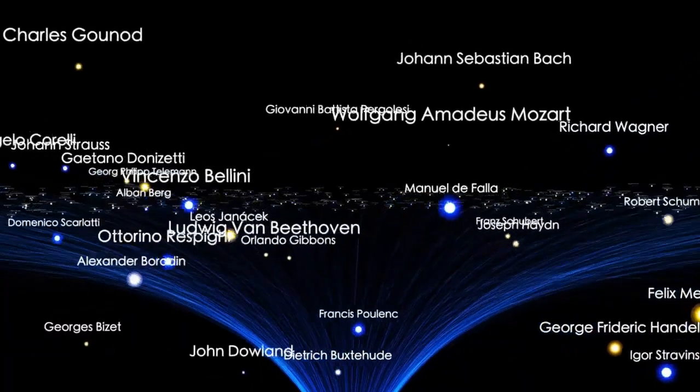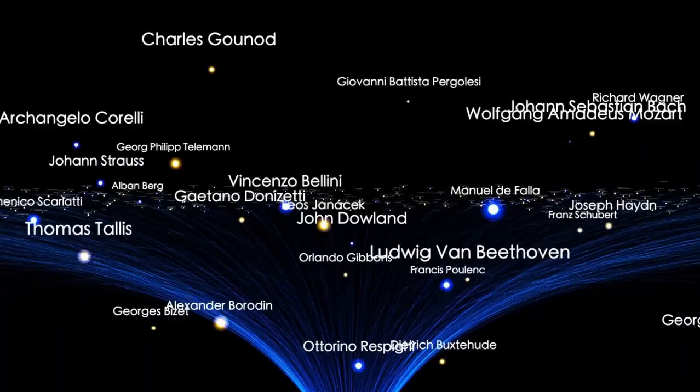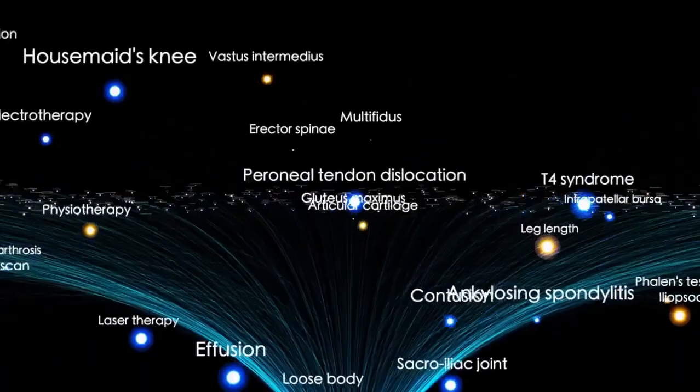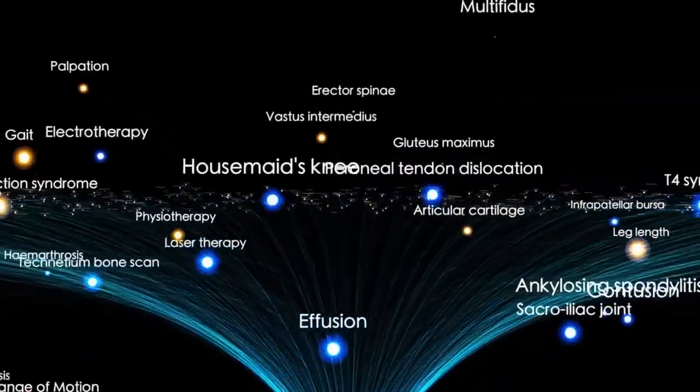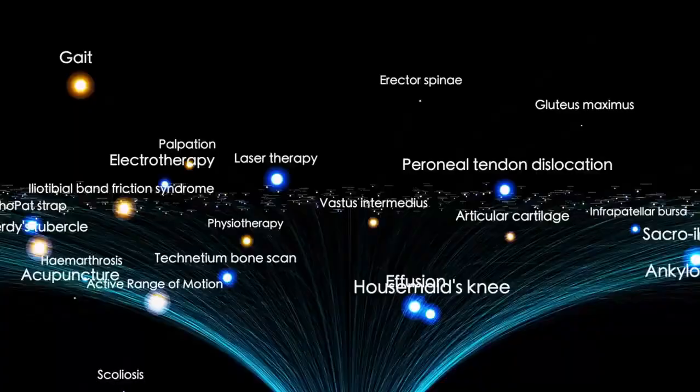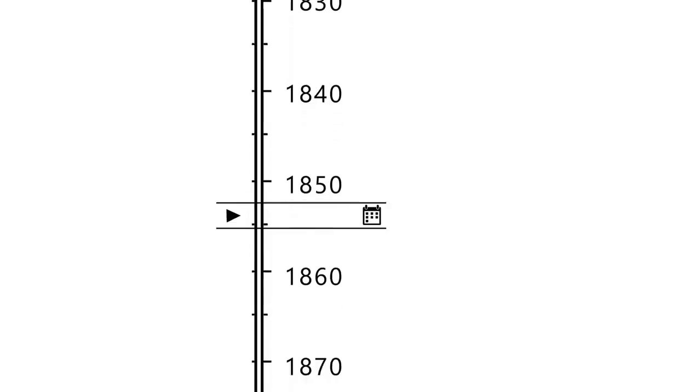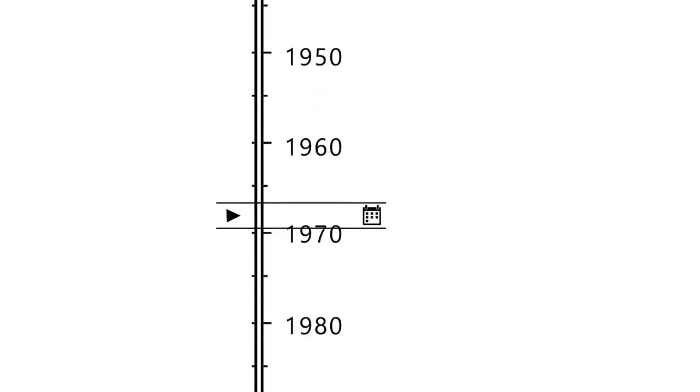The observable universe has a diameter of 93 billion light-years, yet this is just a small bubble of space. The immensity of the universe, with countless galaxies, stars, and planets, transcends comprehension.